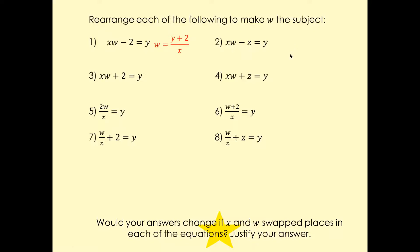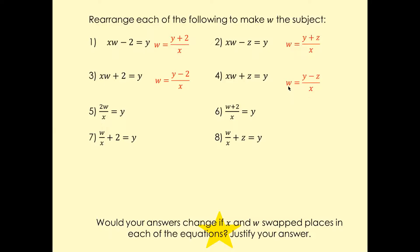For the next one, W equals Y plus Z over X. For the following one, W equals Y minus two over X, and W equals Y minus Z over X. Then W equals X(Y minus Z), and W equals X times (Y minus Z).